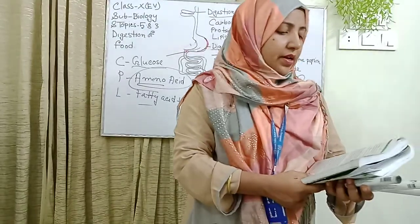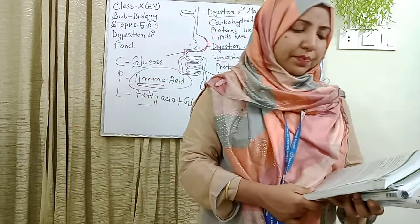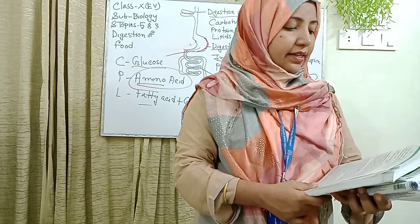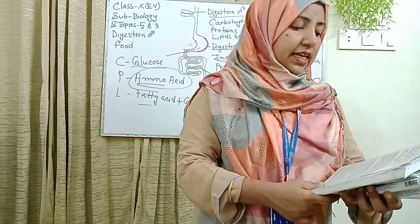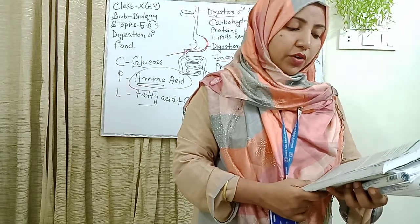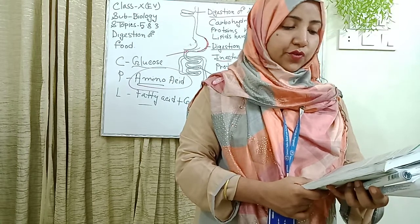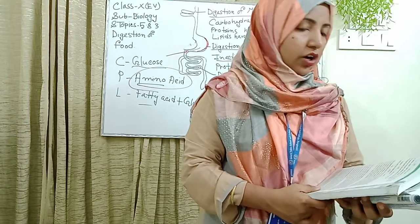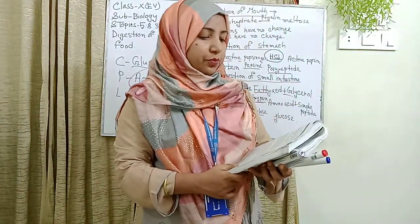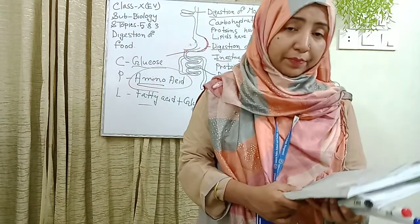Pancreatic juice contains trypsin, lipase, and amylase. On the other hand, intestinal juice contains the enzymes maltase, lactase, and sucrase.